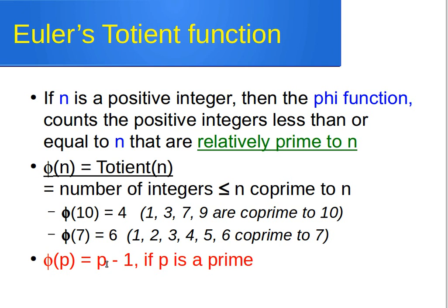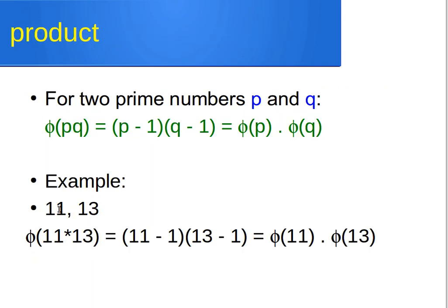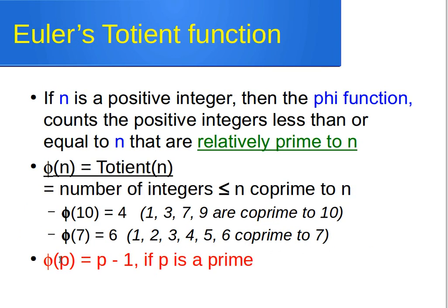Let's take an example: p = 11 and q = 13, both prime. Phi(11 × 13) = (11 − 1)(13 − 1) = 10 × 12 = 120. This equals phi(11) × phi(13) = 10 × 12 = 120. Always remember: phi(p) = p − 1 if p is prime.